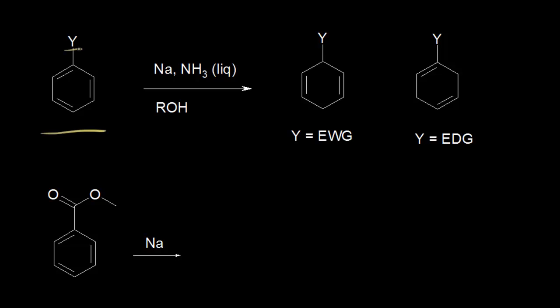If you have a benzene ring with a substituent on it and you add sodium, liquid ammonia, and an alcohol, the substituent is going to affect which carbons are reduced. If you have an electron withdrawing group on your ring, the carbon that's bonded to your substituent is reduced. If you have an electron donating group on your ring, the carbon bonded to that substituent is not reduced. Let's see if we can learn why by going through a mechanism for each one of these examples.